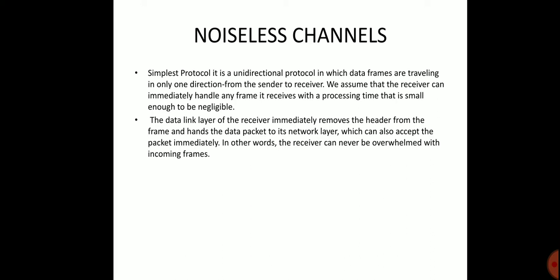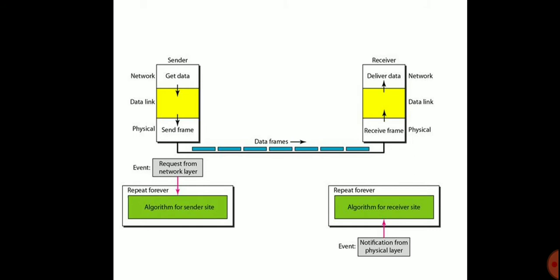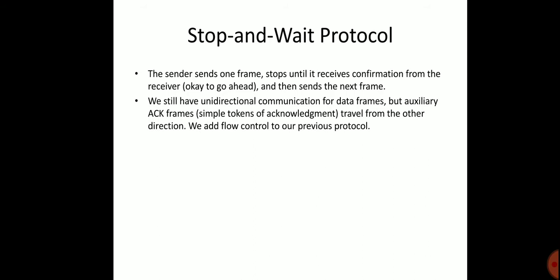Now we look at noiseless channels in our protocols. The sender includes the data link layer, network layer, and physical layer. The data frame is sent from the sender to the receiver. The algorithm for the sender side includes a request from the network layer, and the receiver side has a repeat-forever algorithm along with notification from the physical layer. Now we move to the stop-and-wait protocol.